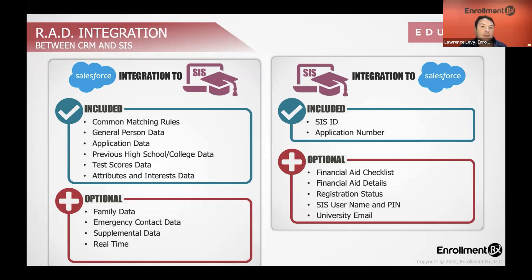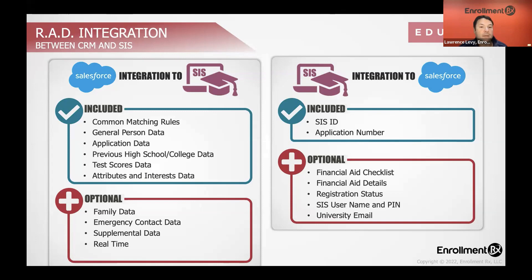We'd also include previous high school or college data — we're going to collect it in the CRM and send it over to the SIS. Optionally, some schools might also choose to collect family data and emergency contact data in the CRM and push that into the SIS as well.